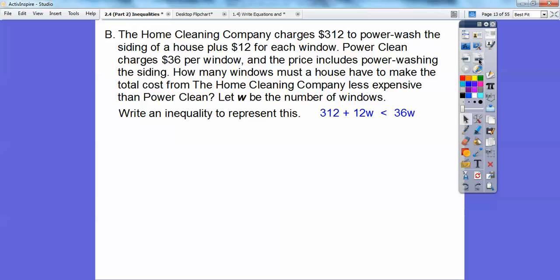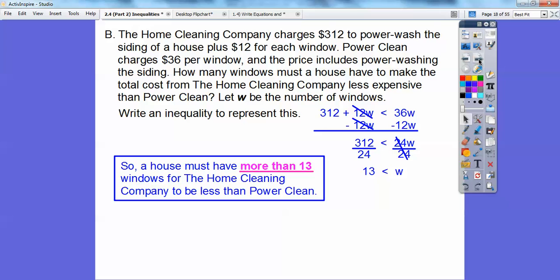Just like the last one, we're going to subtract 12W from both sides and simplify. Then divide both sides by 24, and we get 13. So a house must have more than 13 windows for the home cleaning company to be less than the power cleaning company.